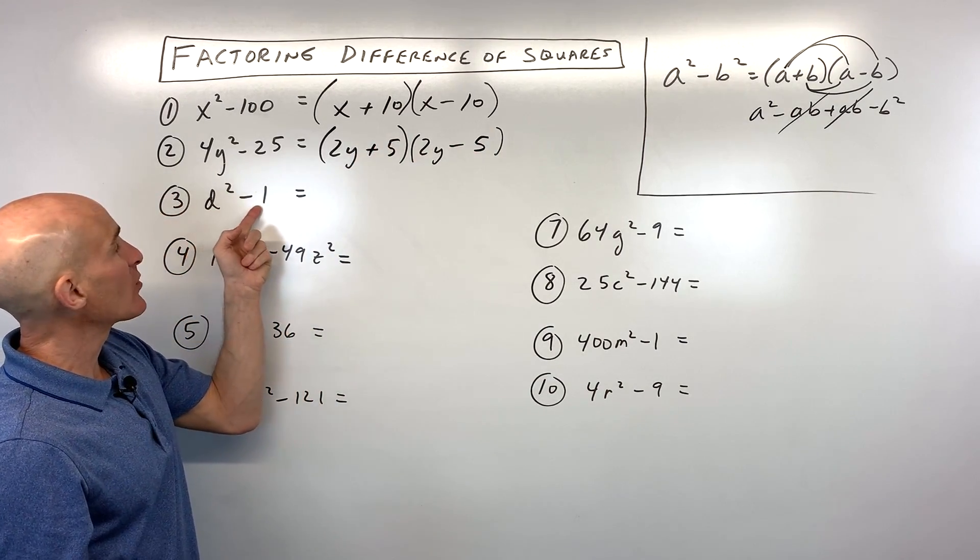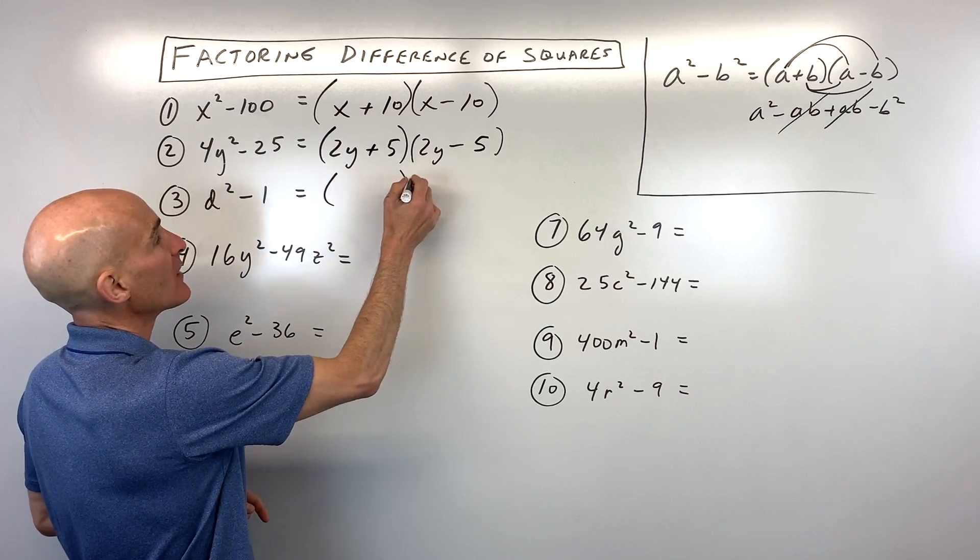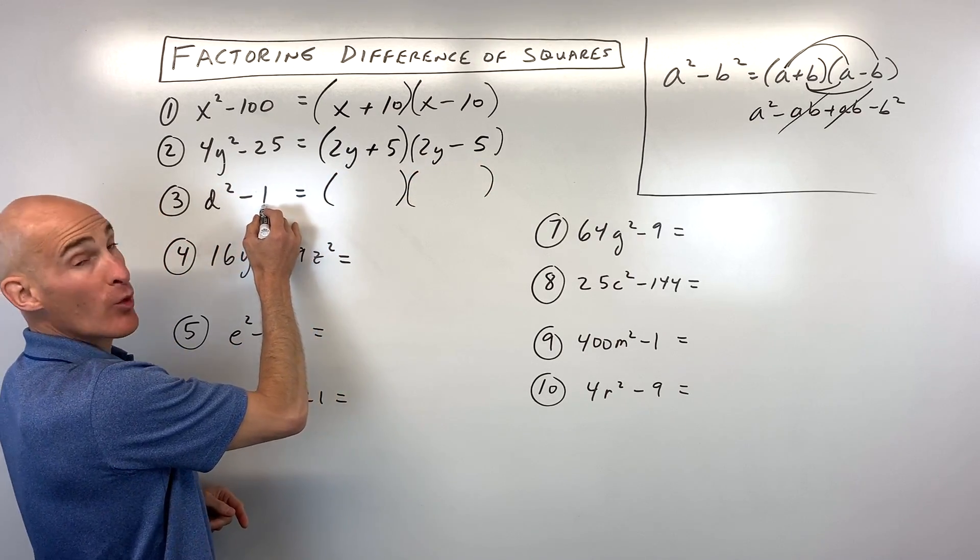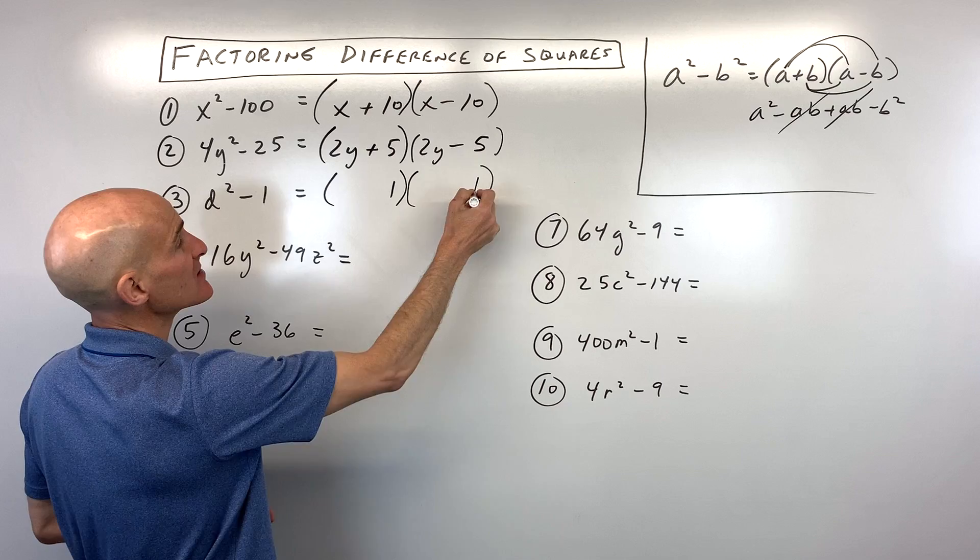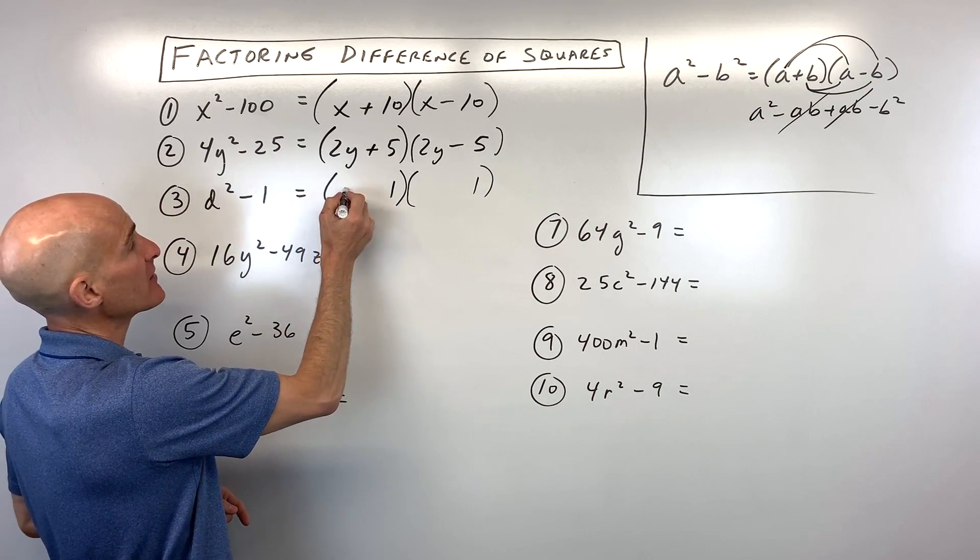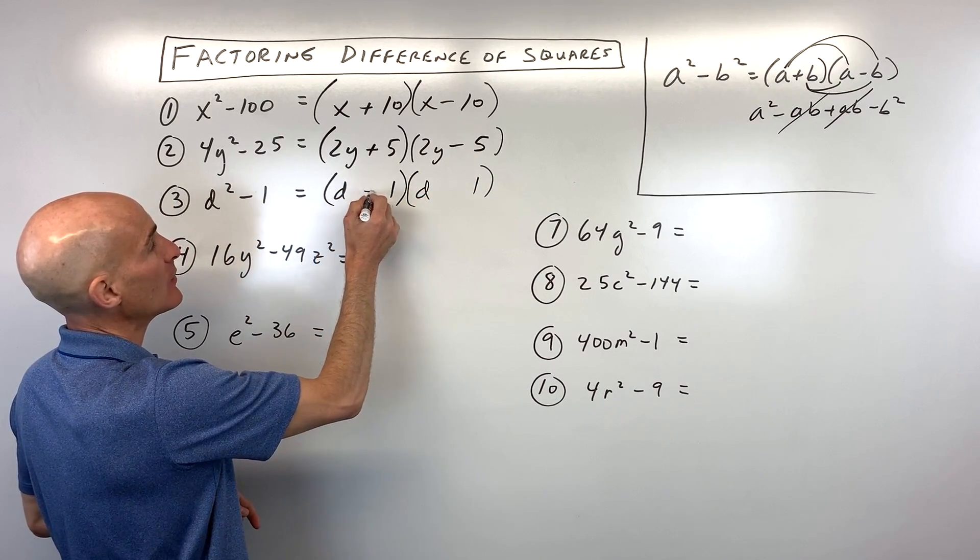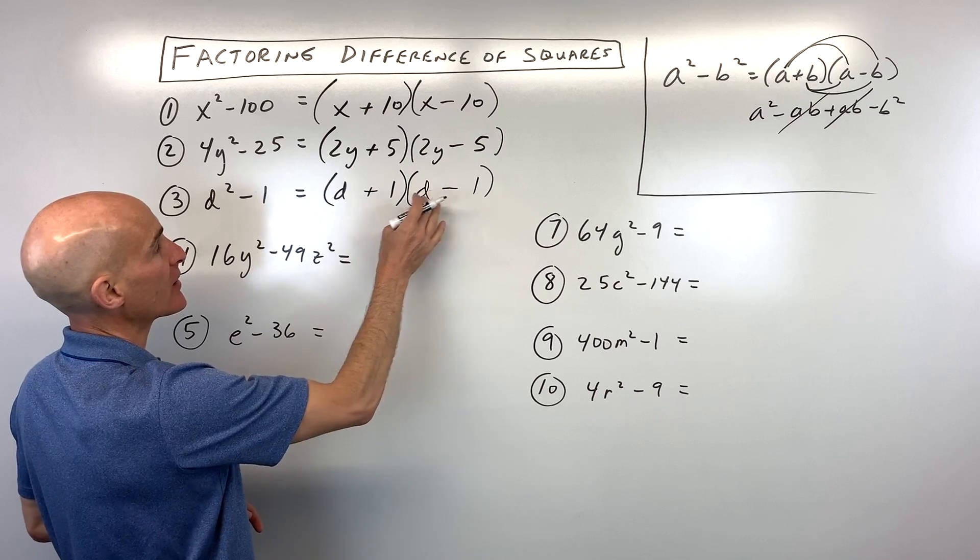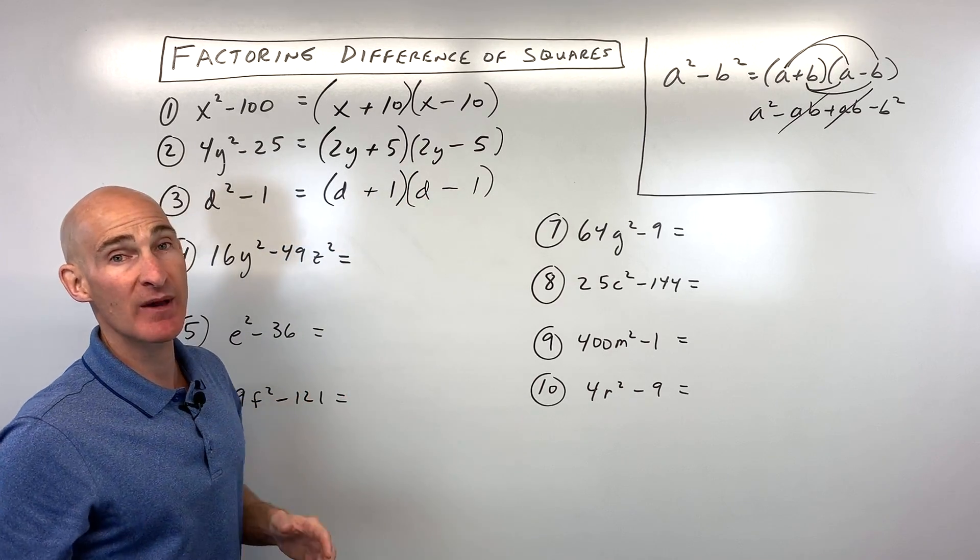How about for number three? d squared minus 1. Well, a lot of times students don't realize that 1 is actually a perfect square. 1 times itself is 1. d squared, that's just going to be d times d. And one of these is adding, one subtracting. I could make this minus and this plus. It doesn't matter either way.